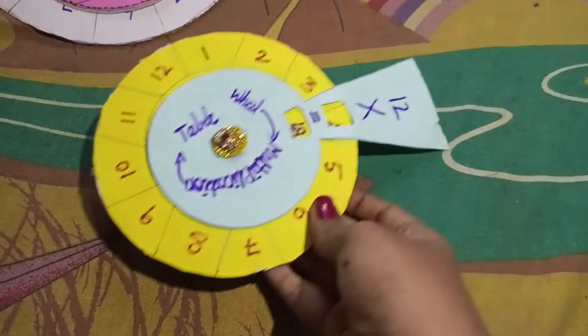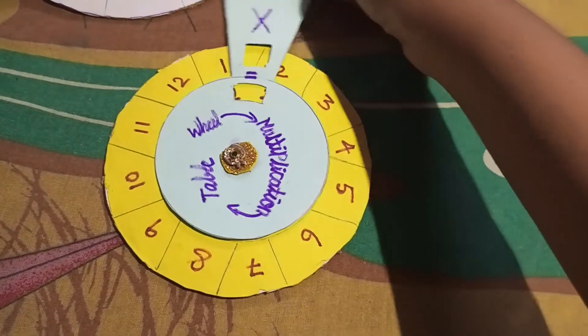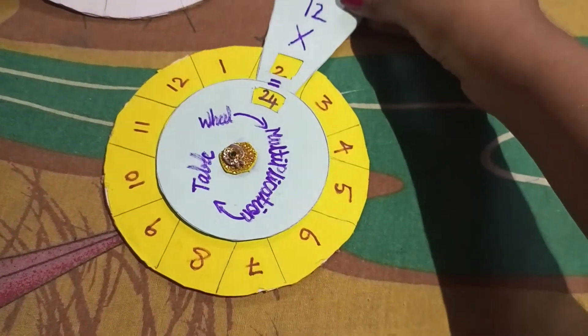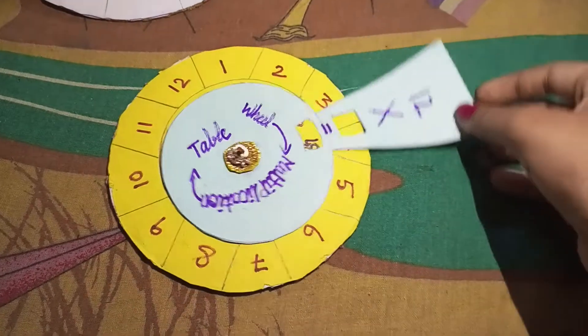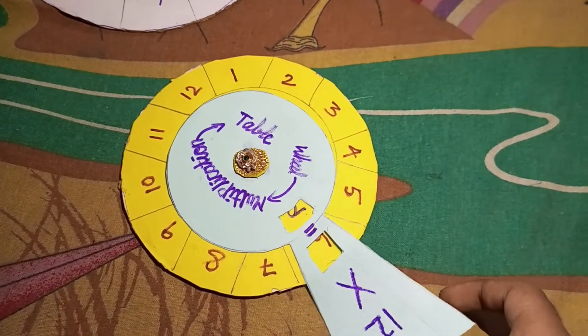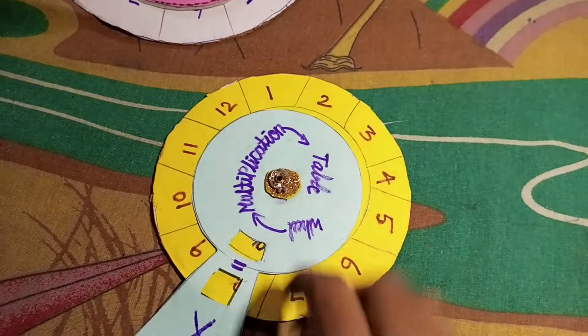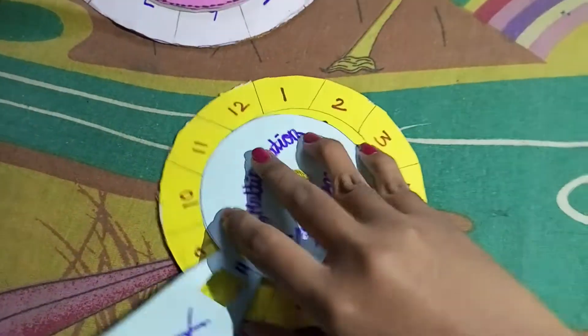Next we have 12 table. 12 ones are 12, 12 twos are 24, 12 threes are 36, 12 fours are 48, 12 fives are 60, 12 sixes are 72, 12 sevens are 84, 12 eights are 96.